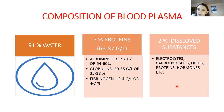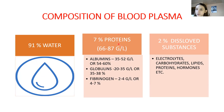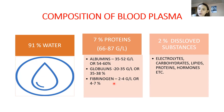Blood plasma consists of 91 to 92 percent water — so blood is mainly water. Seven percent, or 61 to 87 grams per liter, are proteins divided into albumins, globulins, and fibrinogen — whose functions we will discuss shortly. Two percent are other dissolved substances like electrolytes, carbohydrates, lipids, proteins, and hormones, which are transported by albumins in the blood.